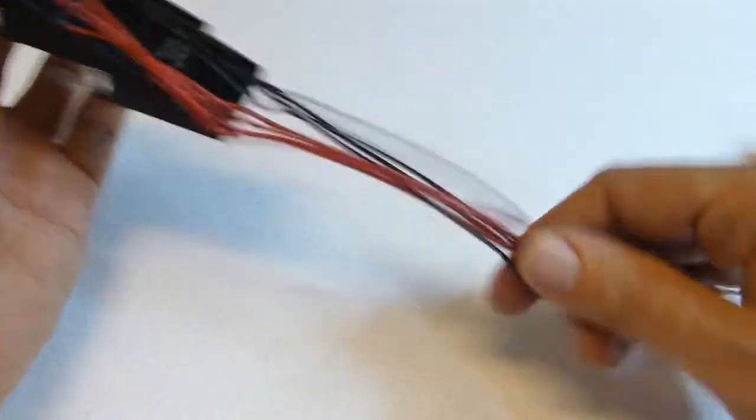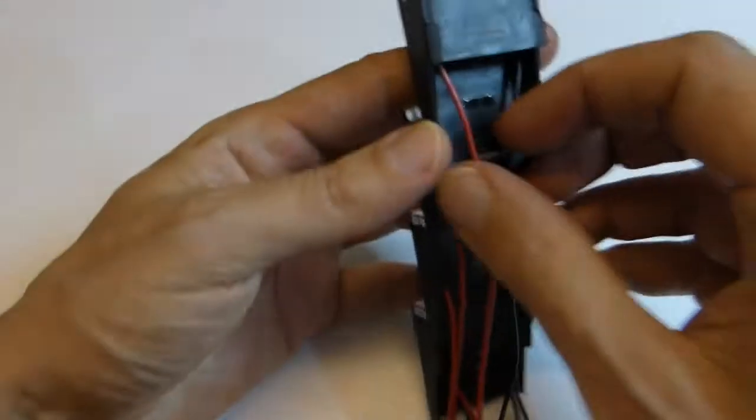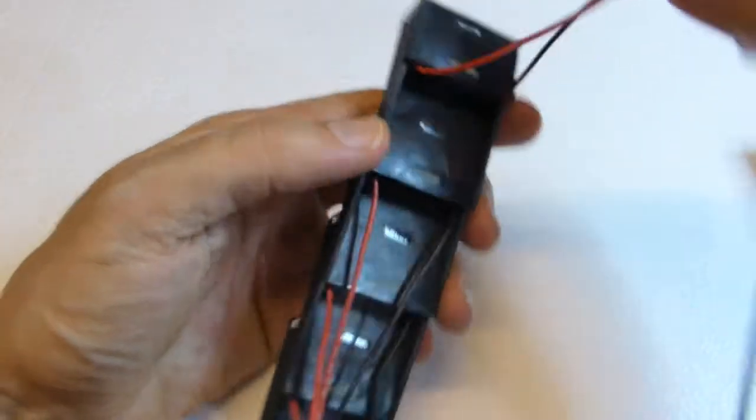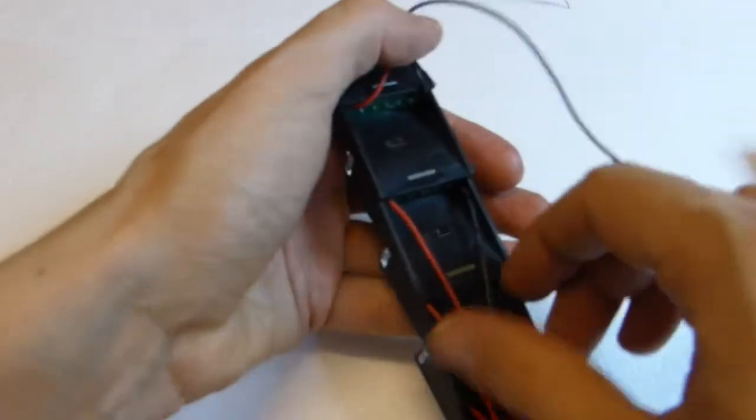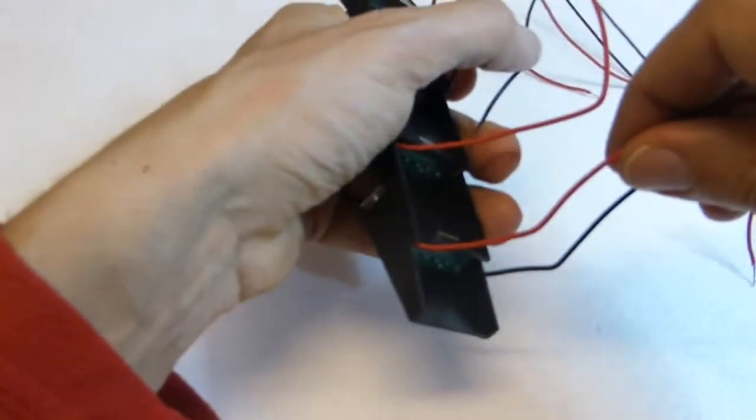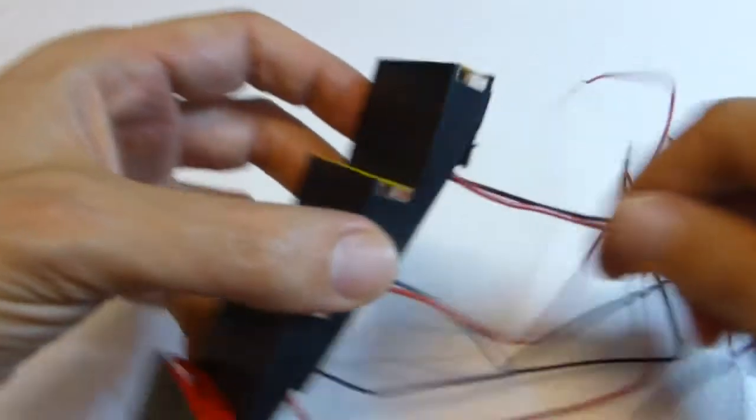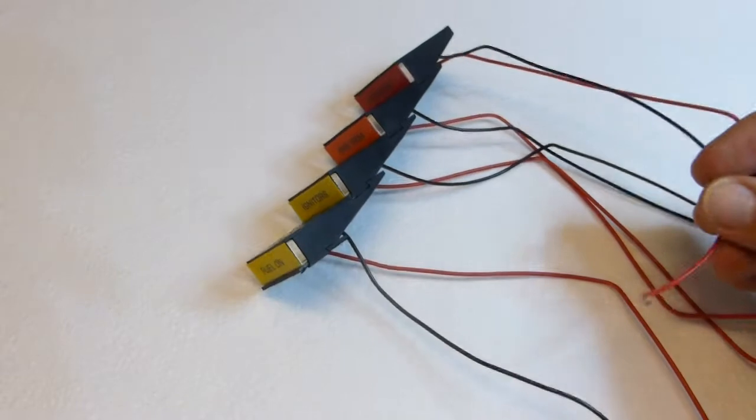You notice there are eight wires from the countdown: two for first lamp red and black, two for second lamp red and black, two for third lamp red and black, two for fourth lamp red and black.